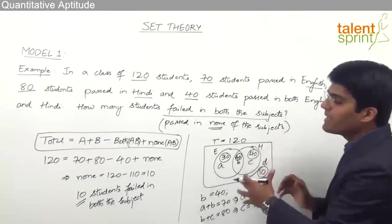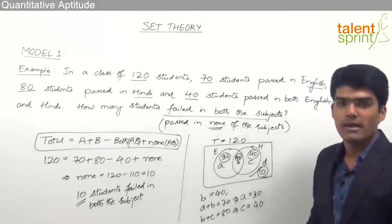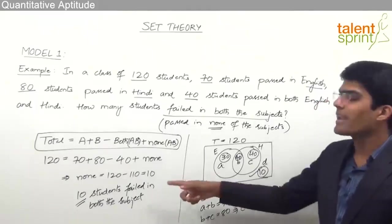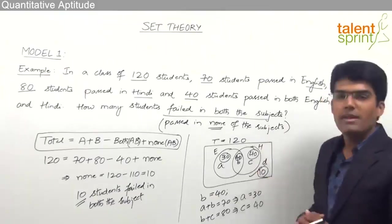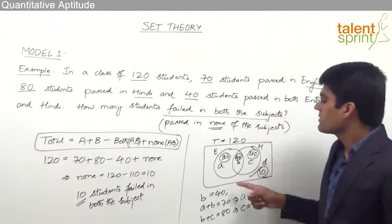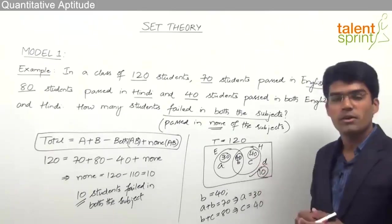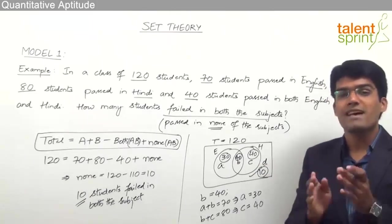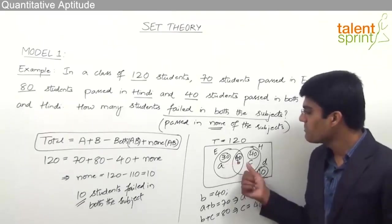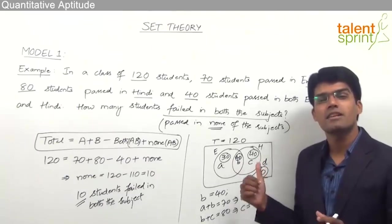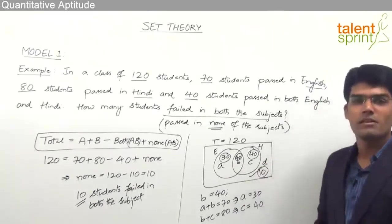Either we can go by Venn diagrams or use the simple equation — substituting values gives the required answer. In both cases our answer is 10. Other types of questions that can be asked: how many students passed only in English? Only English is 30. How many students passed only in Hindi? Only Hindi is 40.